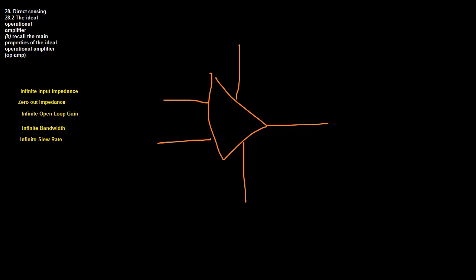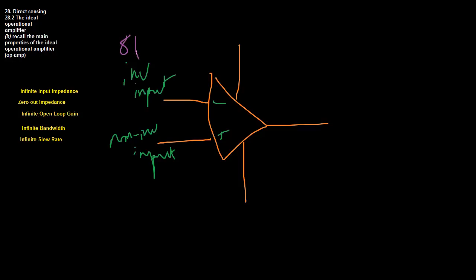Let's label the inputs so we know what we're dealing with. We have two inputs: the inverting input, which is negative, and the non-inverting input, which is positive. If our inverting input is 8 volts and our non-inverting one is 6 volts, the inverting one becomes negative 8 volts because it's inverted, so positive 8 becomes negative 8. The non-inverting doesn't invert, so it stays at 6 volts. They get added together and the resultant voltage becomes negative 2 volts, which will then be amplified.